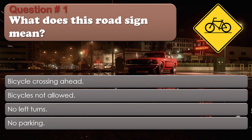Question number 1: What does this road sign mean? Options: Bicycle crossing ahead. Bicycles not allowed. No left turns. No parking. The correct answer is Bicycle crossing ahead.